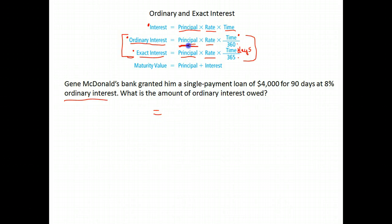Well, the formula here says to take the principal, the starting amount, $4,000, times the rate. The rate is 8% over here. We move the decimal two places to the left, 0.08, so we can calculate with it, times the amount of time. Now this was for 90 days, and if we're doing ordinary interest, it says we divide by 360.